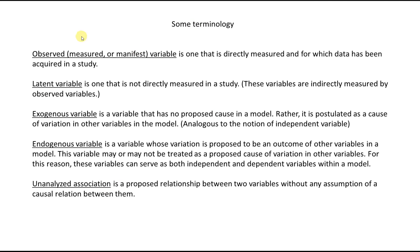Now let's look at some terminology. An observed, measured, or manifest variable is one that is directly measured and for which data has been acquired in a study. A latent variable is one that is not directly measured; it is generally indirectly measured by way of the observed variables. An exogenous variable is a variable that has no proposed cause in a model — it is postulated as a cause of variation in other variables, very analogous to an independent variable. An endogenous variable is a variable whose variation is proposed to be an outcome of other variables in the model, and may also cause variation in other variables, serving as both independent and dependent. An unanalyzed association is a proposed relationship between two variables without any assumption of a causal relation between them.